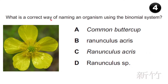What is the correct way of naming an organism using the binomial system? Options: A) common buttercup, B) Ranunculus Acris, C) Ranunculus acris, D) Ranunculus species. Common buttercup is a common name. For a proper binomial name, the genus first letter should be capital R and the species first letter should be lowercase. So the answer is C: Ranunculus acris.